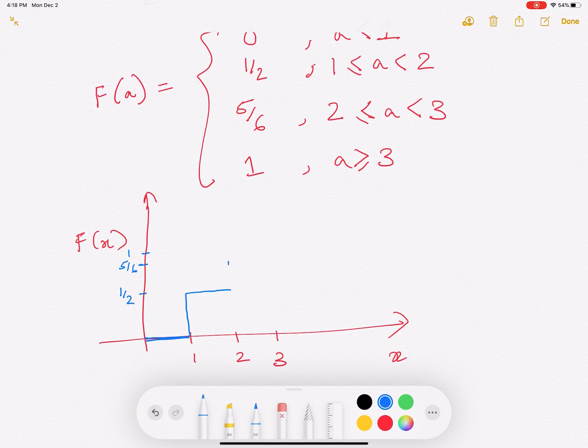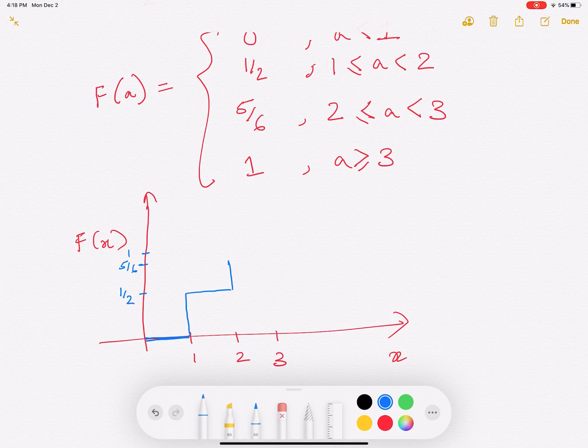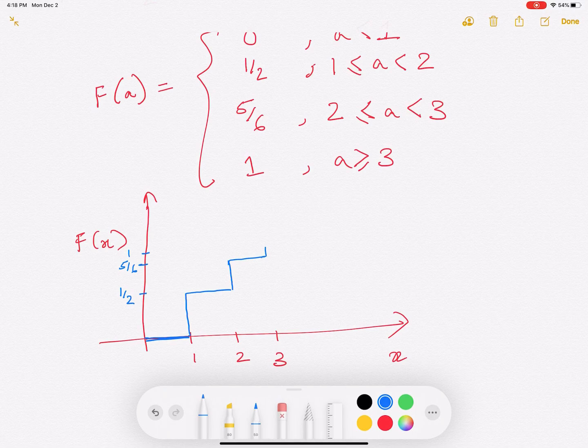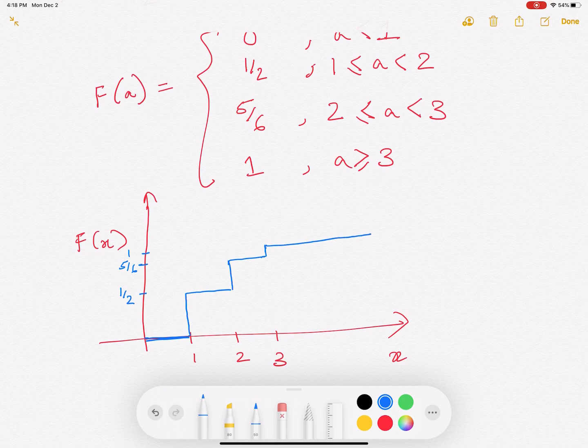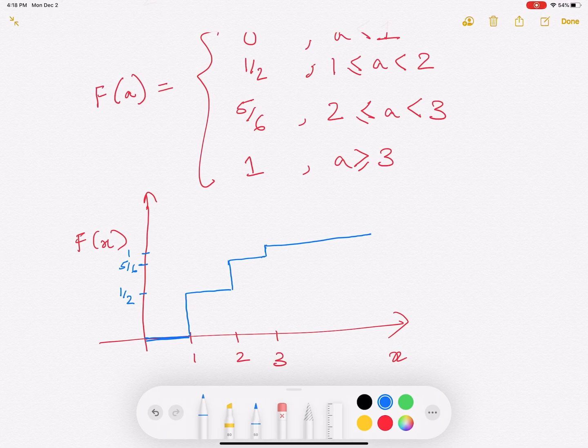That time the CDF will become 5 over 6. Because you're going to add P of 1 plus P of 2. Till 3 once again, it will go like this. And at 3, it will jump to 1. And beyond this value of 3, it will remain constant at 1.